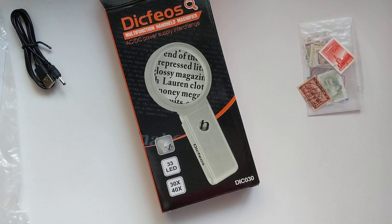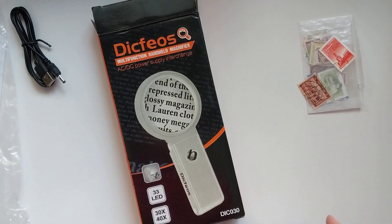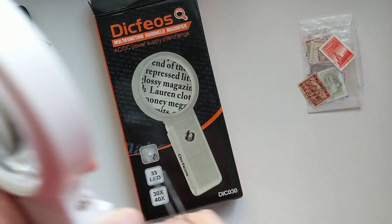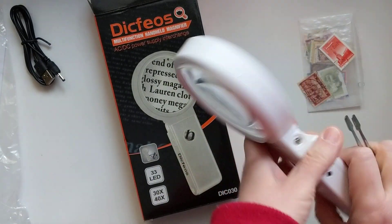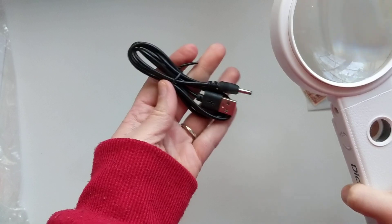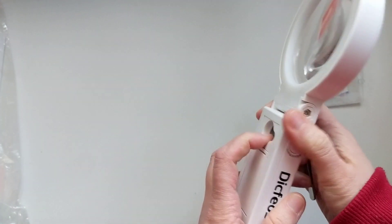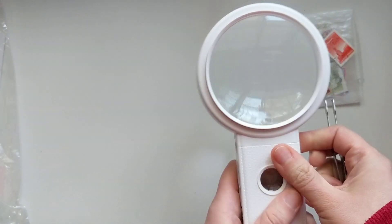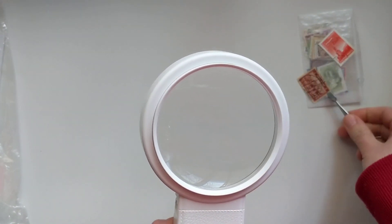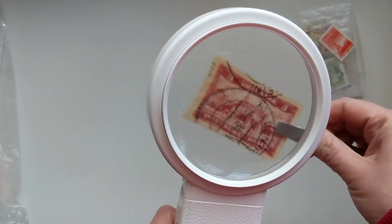Alright, is it going? Yes. So I got this thing to be able to look at stamps better. Oh, it's neat. It comes with a little USB, but I just put batteries in it. It takes three triple A's. And I got it for looking at stamps.